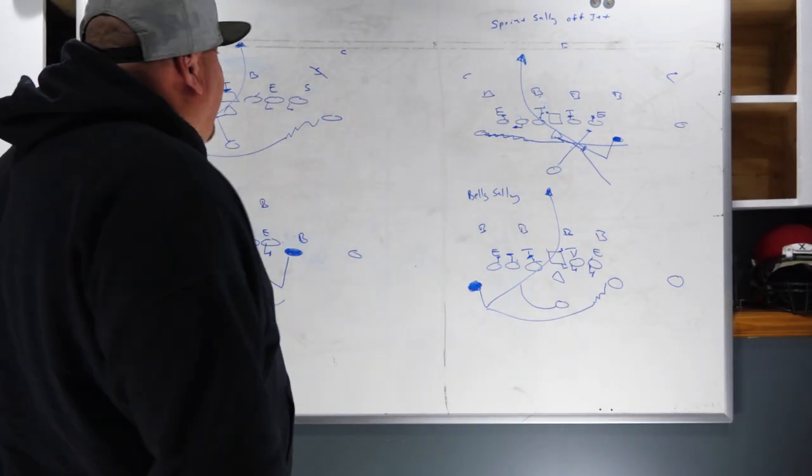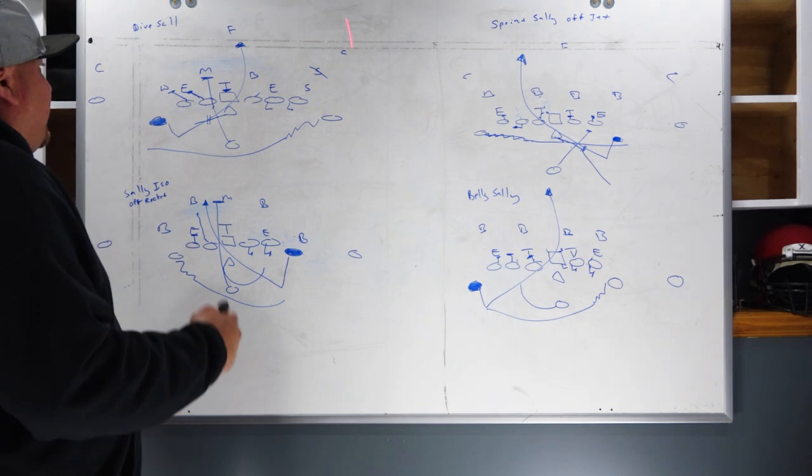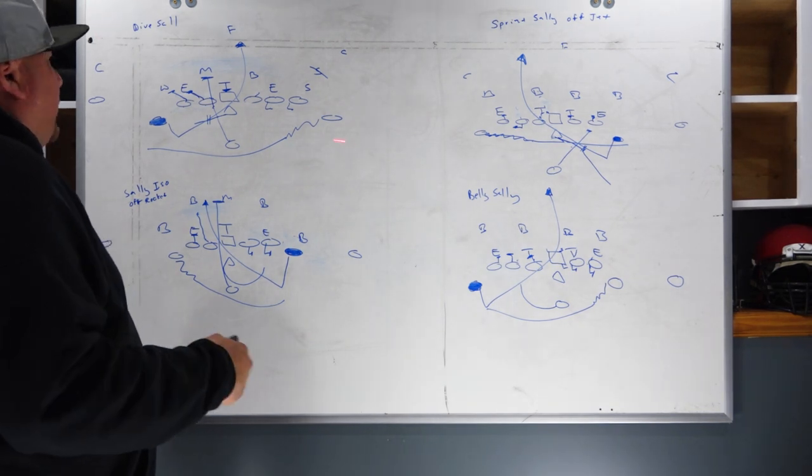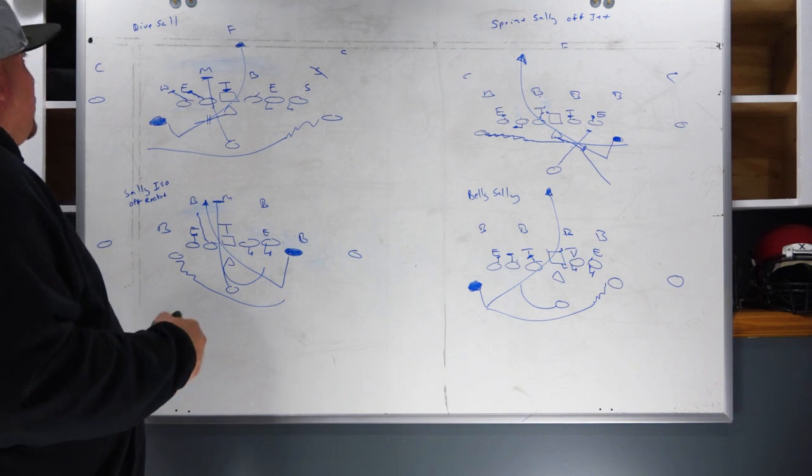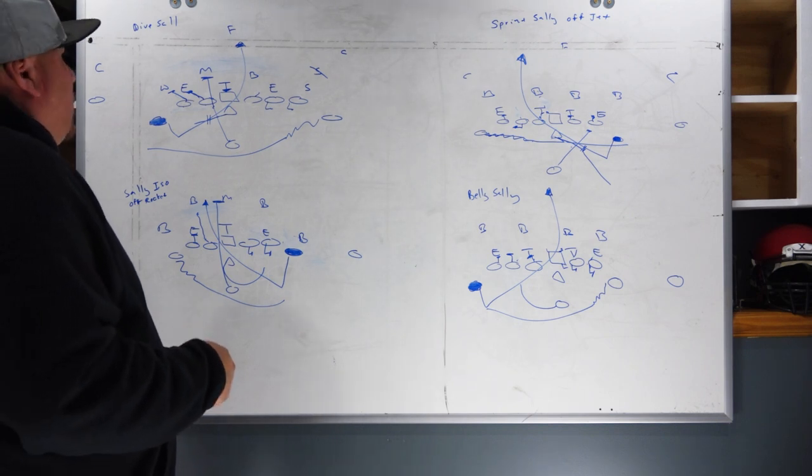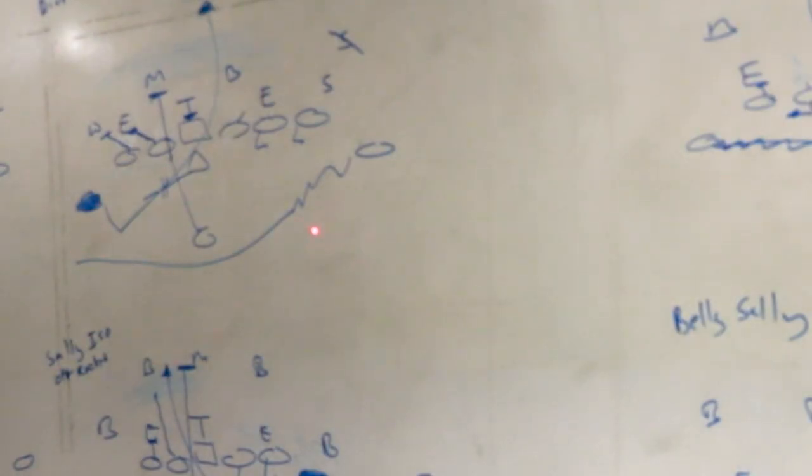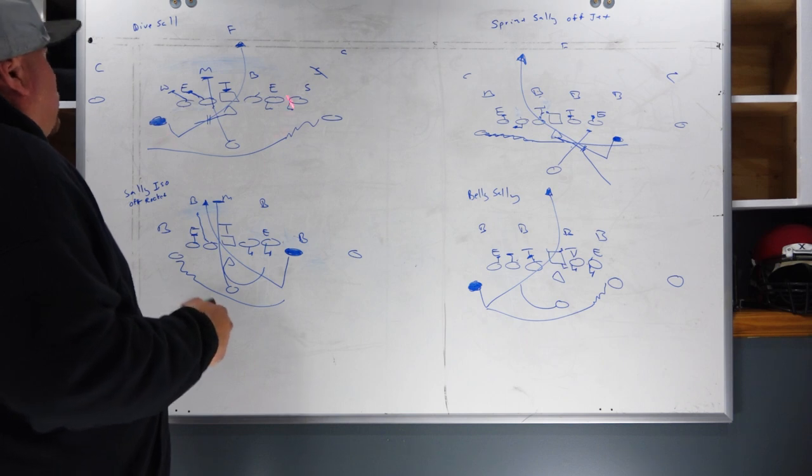This first one here is what we would consider our Red formation. Red means double wing with a split end to the left. We're going to run this off a dive fake. We're going to get our three-step motion from our right wing. He's going to motion across through the fullback's feet because we're going to try to get some movement from these linebackers to run underneath them.